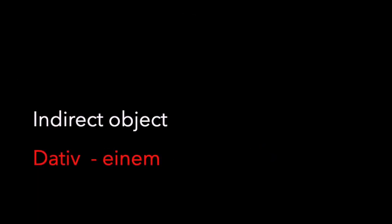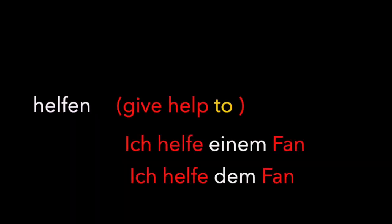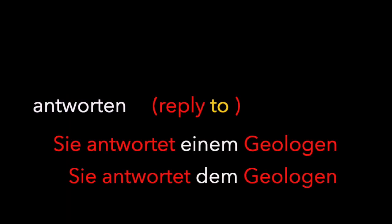And lastly, let's look at the Dativ case, when the male noun is the indirect object of the sentence. A good example is helfen, like at the beginning of the video. Helfen needs Dativ because you give help to someone. So the sentence is: Ich helfe einem Fan. And with the definite article it becomes: Ich helfe dem Fan. A second verb for the Dativ is antworten — she replies to a geologist: Sie antwortet einem Geologen. And she replies to the geologist: Sie antwortet dem Geologen.